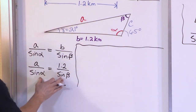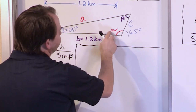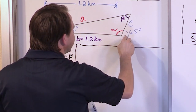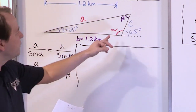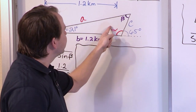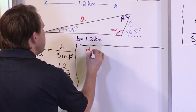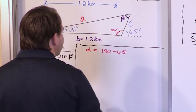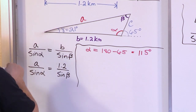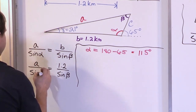We need to supply that missing information. For alpha: I don't know it directly, but I know the angle from the other side down to the ground is 65 degrees. From geometry, a straight line is 180 degrees, so alpha must be 180 minus 65. Therefore alpha equals 115 degrees.